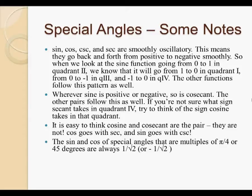Another important thing to note is that the sine and cosine of special angles that are multiples of pi by 4, for instance, 5 pi by 4, 9 pi by 4, 13 pi by 4, or 45 degrees, so 45 degrees, 135 degrees, 225 degrees. These special angles are always 1 over root 2, or negative 1 over root 2. And also remember that 1 over root 2 equals root 2 over 2. So it's always going to be root 2 over 2 when the angle is a multiple of 45 degrees, such as 135 degrees, 225 degrees, etc.